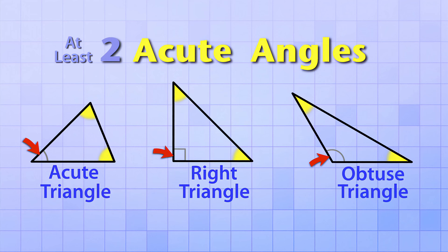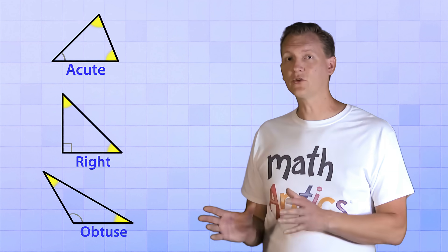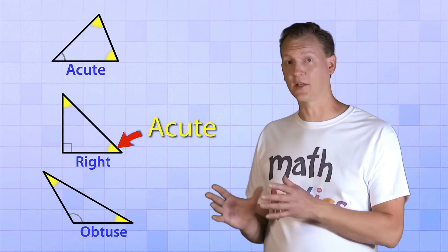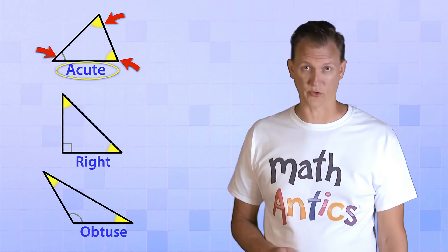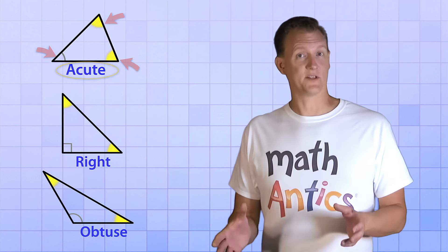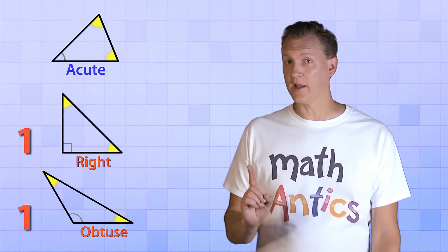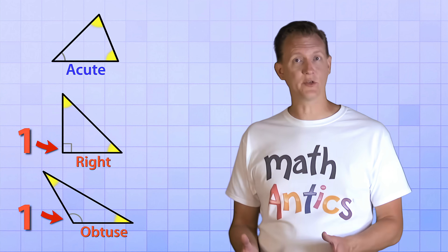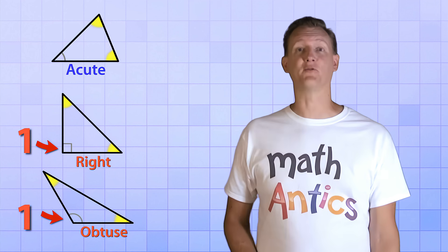It's the other angle that determines what type it is — that's important to know so you don't get tricked. For any given triangle, just because you see one acute angle, that doesn't mean it's an acute triangle. You have to look at all the angles. The situation is easier with right and obtuse triangles, because you can only have one right or obtuse angle per triangle, so as soon as you spot one of those kinds of angles, you know what type of triangle you have.